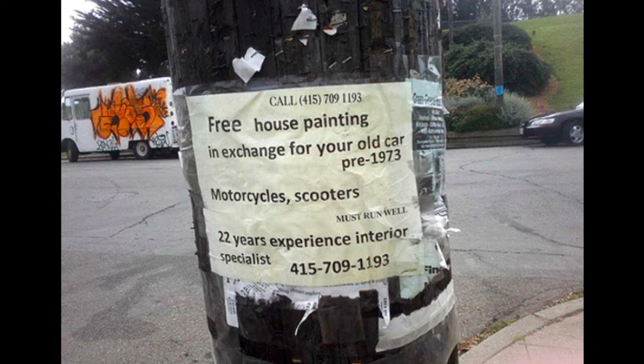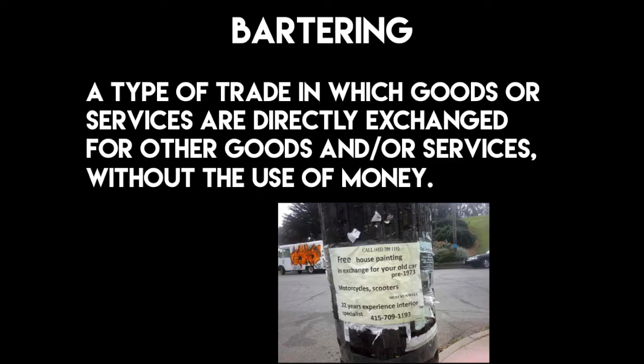I want to start with this image, which is somebody offering free house painting in exchange for an older car or motorcycles and scooters, so there's no money being exchanged here. And that's exactly what bartering is — it's a type of trade in which goods or services are directly exchanged for other goods and or services without the use of money. So you'll notice this person's offering a service, they're looking for a good, there's no money being exchanged. That's the key thing to know.